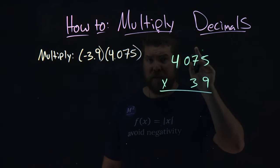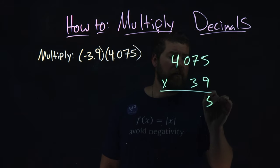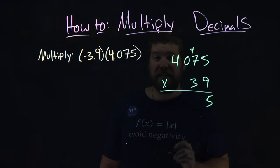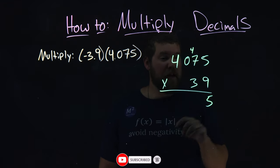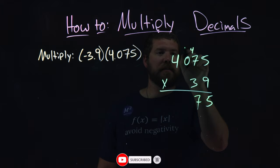9 times 5 is 45. We have a 5 here, and we carry the 4. 9 times 7 is 63, plus 4 is 67. 7 comes down, 6 comes up here.